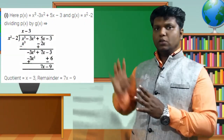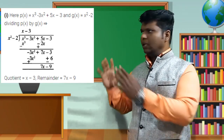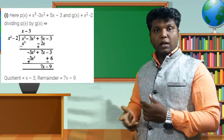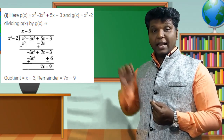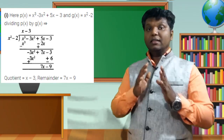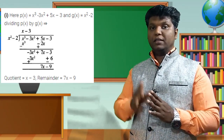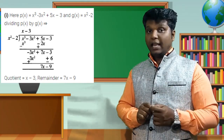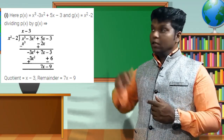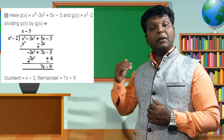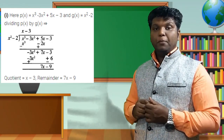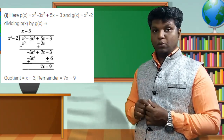Set up the division with p(x) inside and g(x) = x² + 0x − 2 outside. First step: take the first term of the dividend x³ and the first term of the divisor x², divide them — x³ ÷ x² = x. Place x in the quotient.